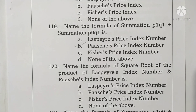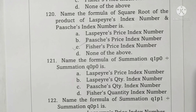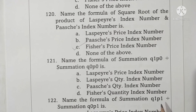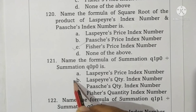Question 120: name the formula — square root of the product of Laspeyre's index number and Paasche's index number. This is Fisher's index number. Option C is correct. Question 121: name the formula — summation Q1P0 divided by summation Q0P0. This is the formula of Laspeyre's quantity index number. Option B is correct.